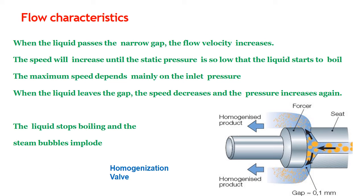Here we will see the flow characteristics in the homogenizer. When the liquid passes the narrow gap, the flow velocity increases. The speed will increase until the static pressure is so low that the liquid starts to boil. The maximum speed depends mainly on the inlet pressure. When the liquid leaves the gap, the speed decreases and the pressure increases again. The liquid stops boiling and the steam bubbles implode. This flow characteristic is explained through the diagram at the bottom.